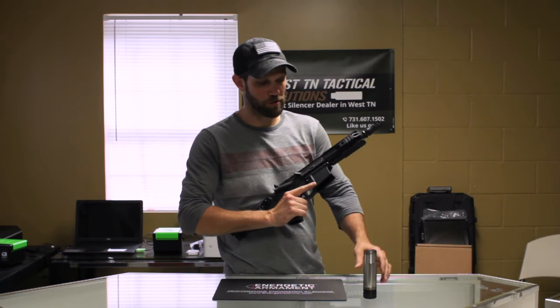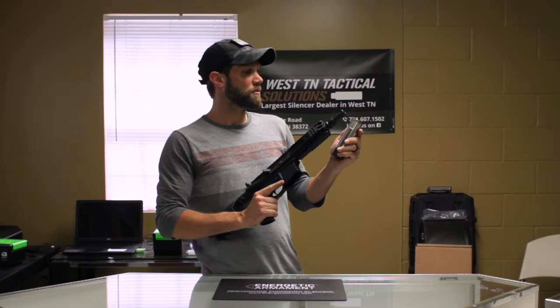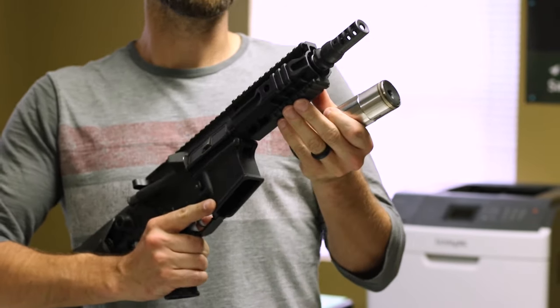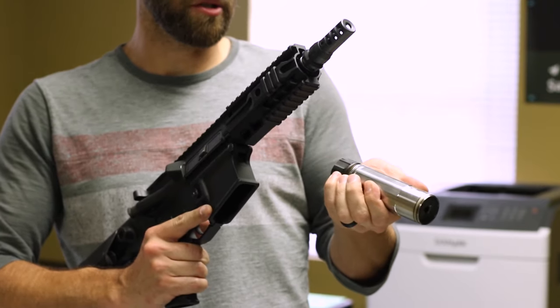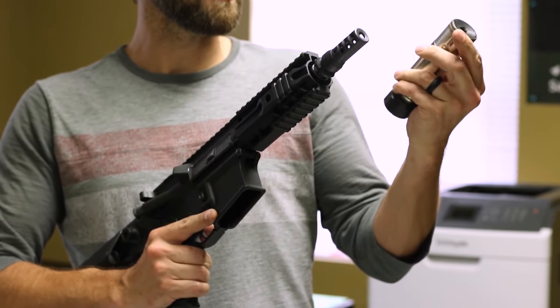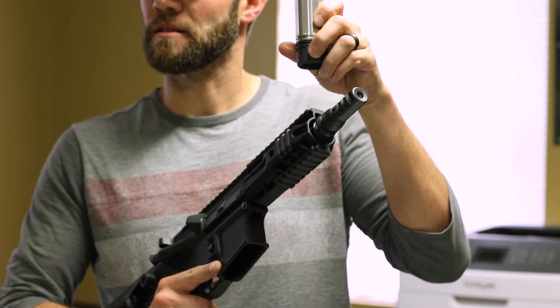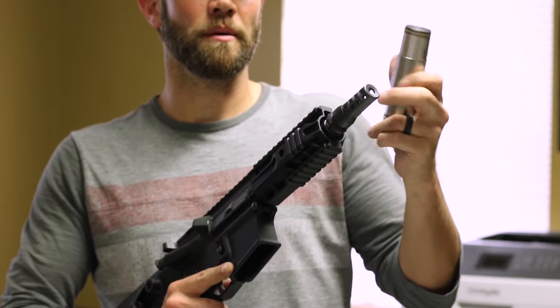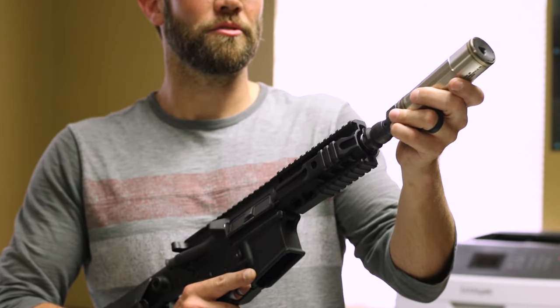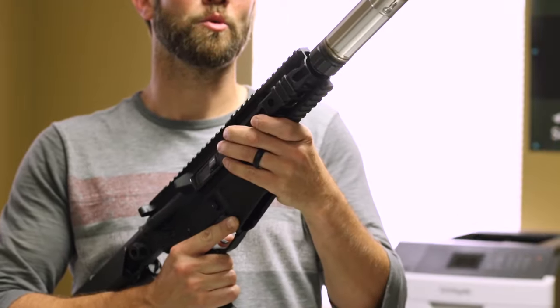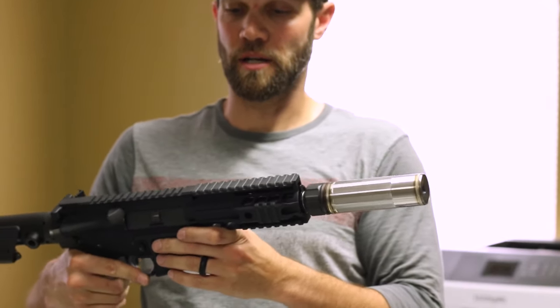And one of the cool features about the Dead Air Sandman line of suppressors is that they are all quick attach and detach. And the way that that takes place on here is on the suppressor itself. There's a little dimple on the end of the collar that lines up with the three ports on the front end and then once that's lined up give it a quick turn and it is ready to go.